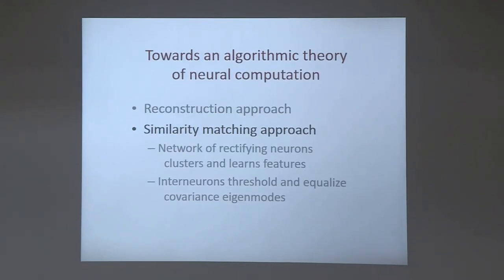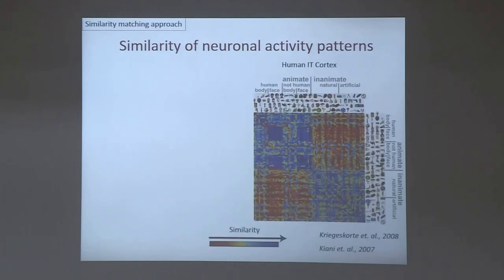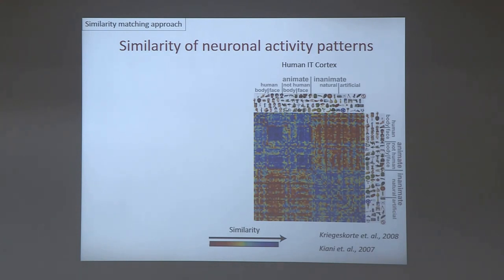The approach we developed we call similarity matching. But before I tell you exactly what it is, let me show a little more experimental data to motivate it. This is a very nice result obtained by functional magnetic resonance imaging, fMRI, in the human inferotemporal cortex — IT — which is one of the higher visual areas.